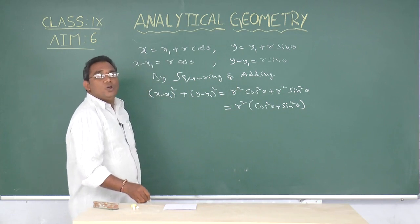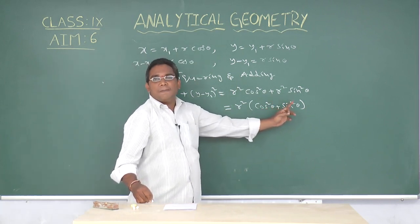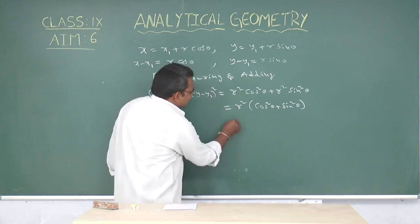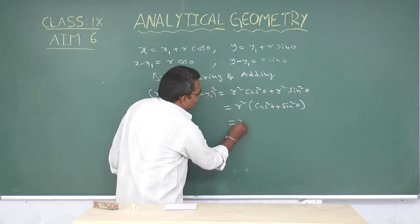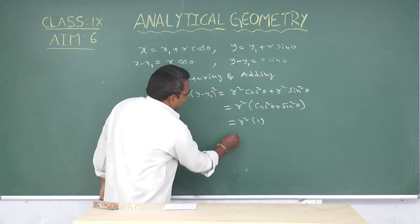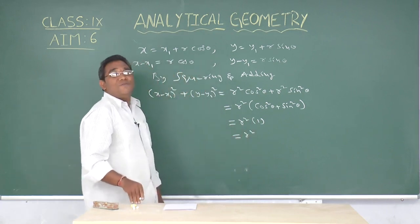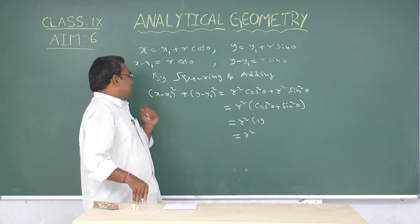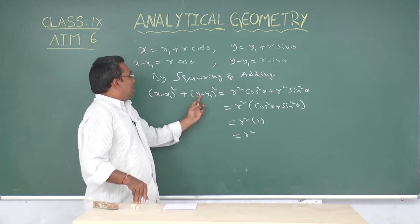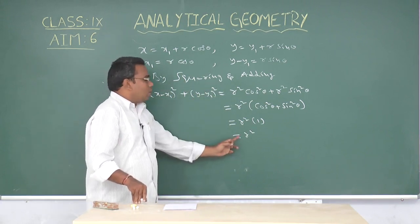We know the identity: cos²theta plus sin²theta equals 1. Hence, its value is r² into 1, that is r². Finally, (x minus x1)² plus (y minus y1)² equals r².